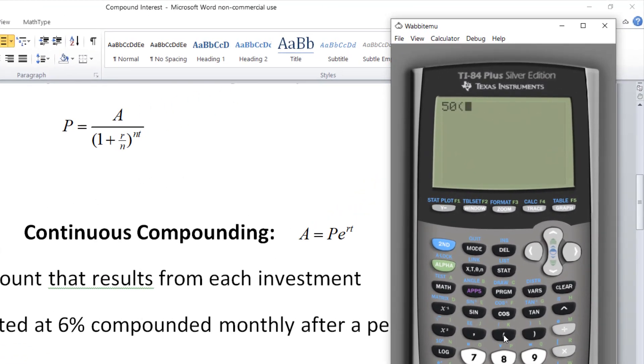Principal is 50, that's your present value. Parentheses, 1 plus. The interest rate needs to be converted to a decimal, so this will be 0.06. N in this case is 12 because it's compounded monthly. Divide by 12. And then exponent. It's monthly for three years, so that's 3 times 12 is 36. Hit enter.